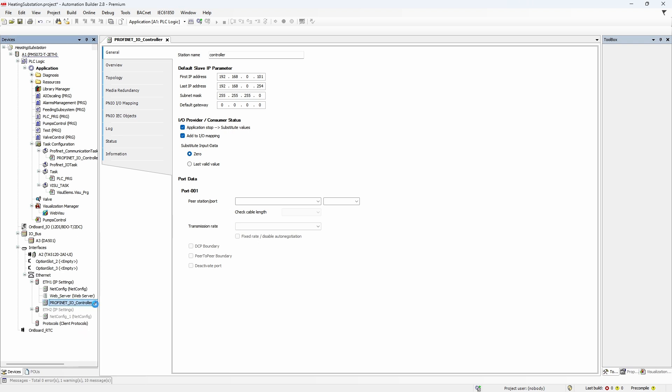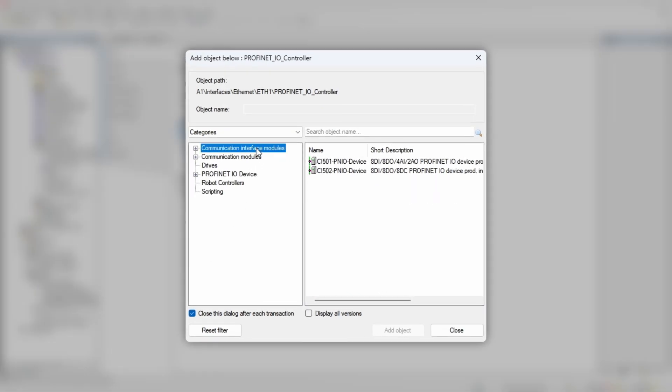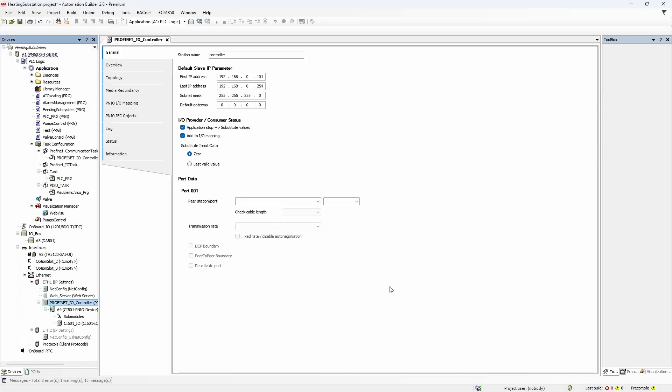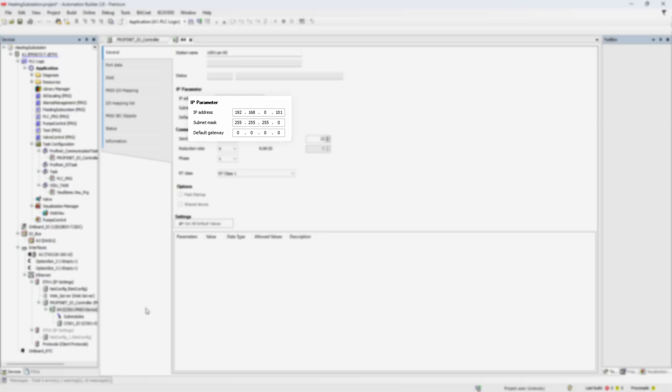Now, under PROFINET I.O. controller, add the PROFINET I.O. device. In the section communication interface modules, you will find CI501 device. Give it a name which corresponds to electrical drawings and hit add object. Go to settings of the added device. You can see that IP address is already set from the range we specified before.